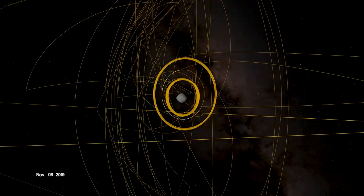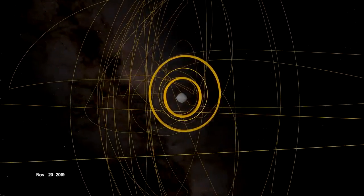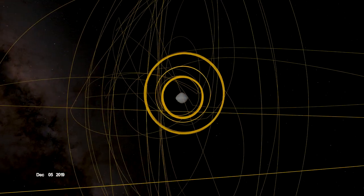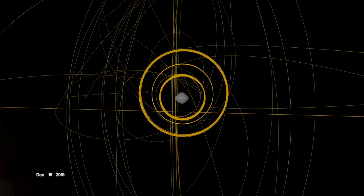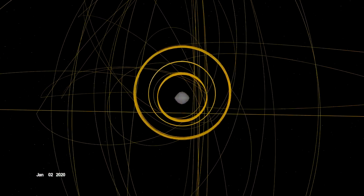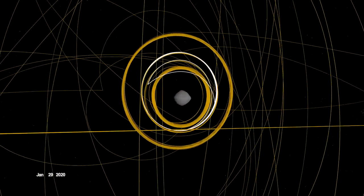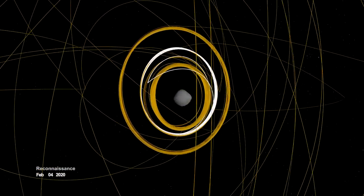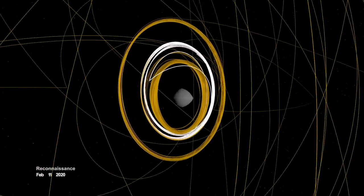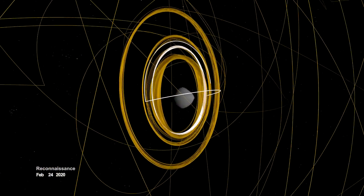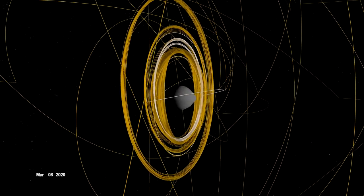OSIRIS-REx concluded its first year at Bennu back in orbit, circling the asteroid's terminator, or boundary, between day and night. Here, outside forces acting on the spacecraft are balanced, allowing it to orbit within the same plane over time. Reconnaissance resumed in early 2020 with close flyovers of the primary sample collection site, Nightingale, and the backup site, Osprey.